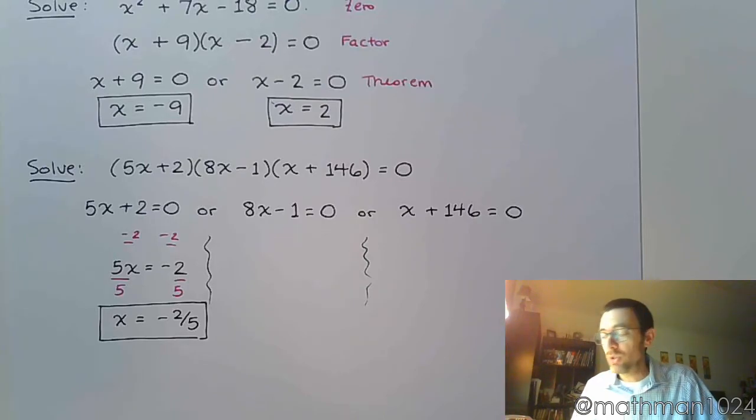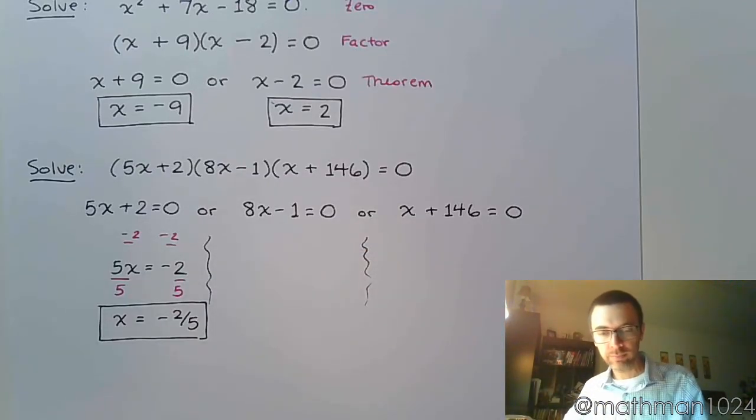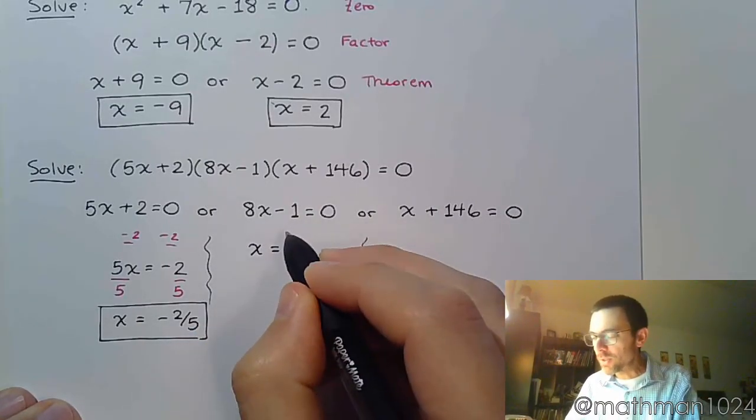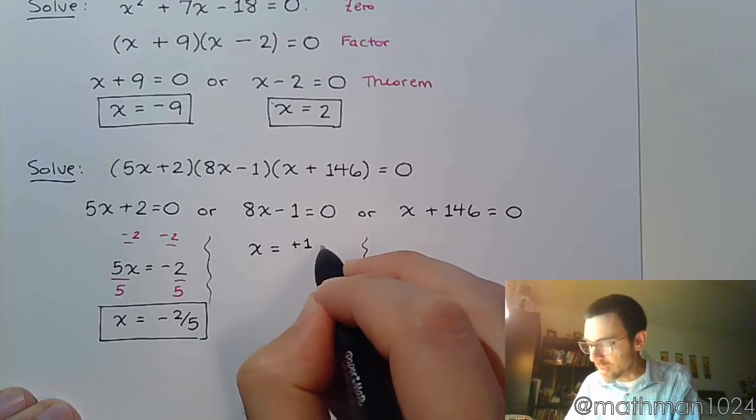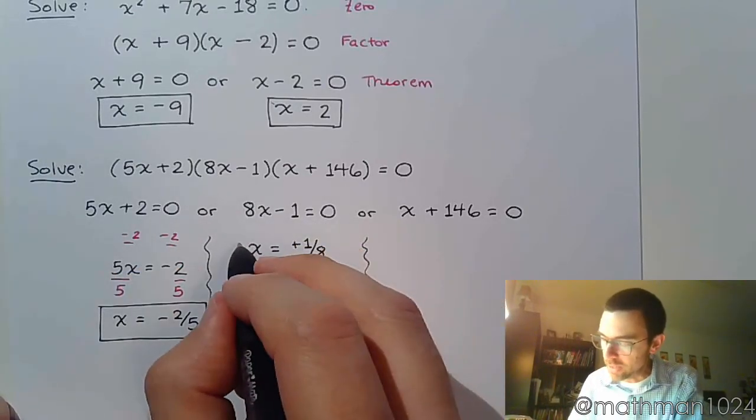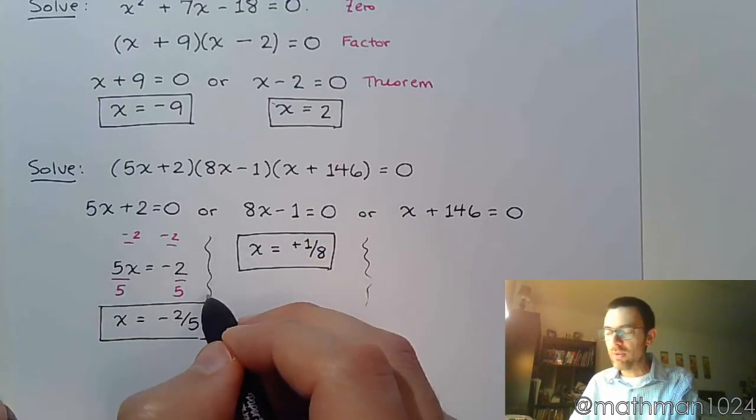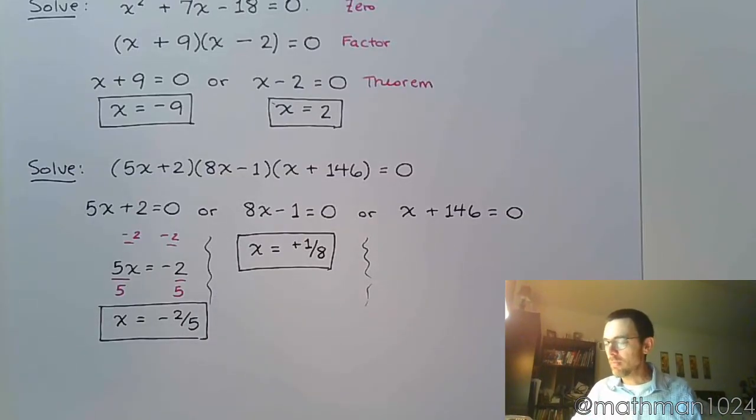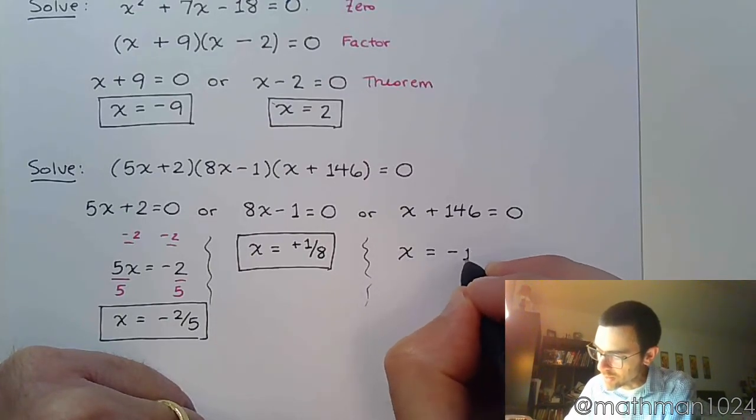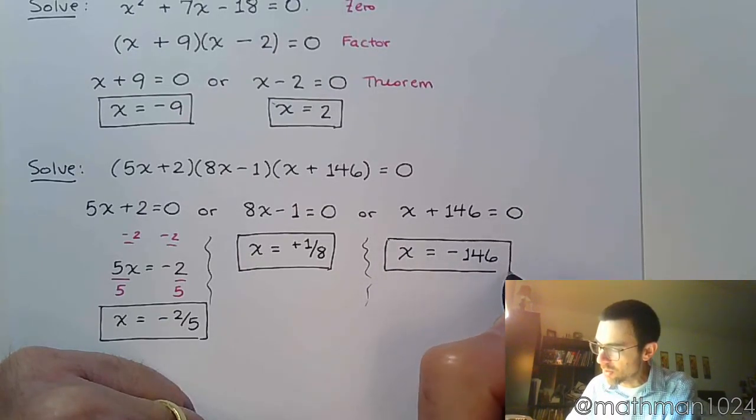Now, you can also do a little shortcut here. Talk to me about the steps you would take to get x by itself. Well, the first thing you would do is add 1 to both sides and then divide by the coefficient to get x by itself. So, there you go. x = 1/8. And if you did the same steps I did over here by adding 1 and then dividing by 8, you're going to get the same answer. Just like over here. How do you get x by itself? To get x by itself, you have to subtract 146. So, these are the three solutions to this equation.